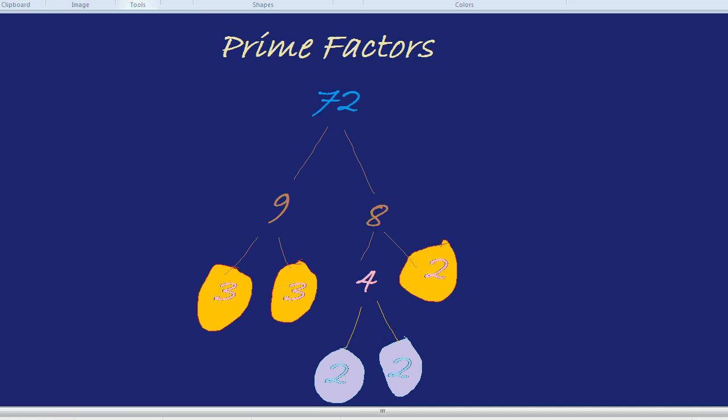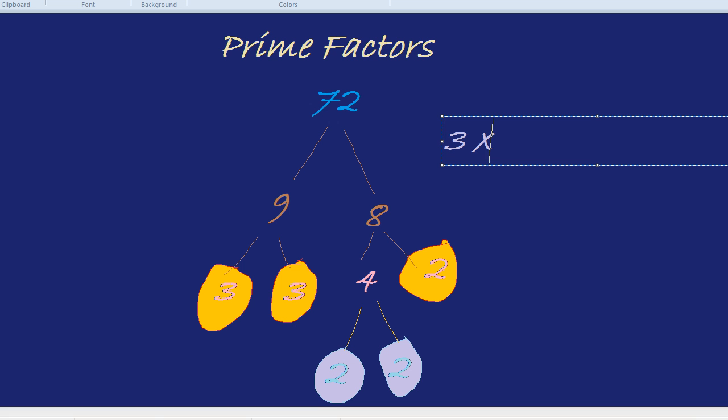There we are. Let's write that all out as a product. Remember, product means multiply. You've got 3 times 3, but instead of writing that, and then instead of writing 2 times by 2 times by 2, I'm going to write 3 squared times by 2 to the power of 3 because there are two 3s multiplied together and three 2s multiplied together.